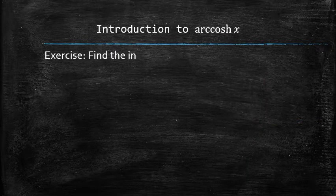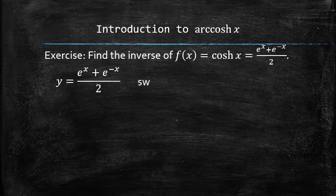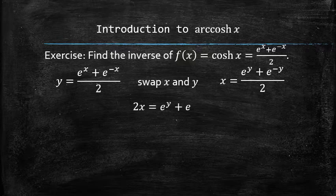Let's find the equation of the inverse of the hyperbolic cosine function. To find the inverse, we first swap the x and y in the equation and now the goal is to isolate the y variable. We multiply both sides by 2,